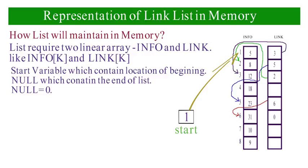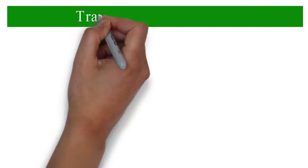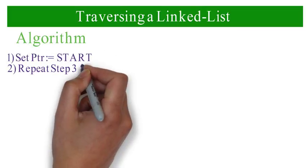At address 2, INFO array stores 8 and LINK array stores 5. At address 5, INFO array stores 23 and LINK array stores 6. At address 6, INFO array stores 31 and LINK array stores 0. Zero represents NULL, which means the linked list ends here.